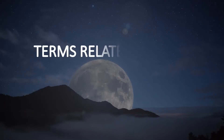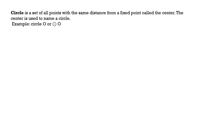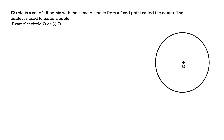Our topic for today is all about terms related to a circle. Before we proceed, let us first define what a circle is. A circle is a set of all points with the same distance from a fixed point called the center. The center is used to name a circle — for example, circle O, using the circle symbol followed by the center point O.